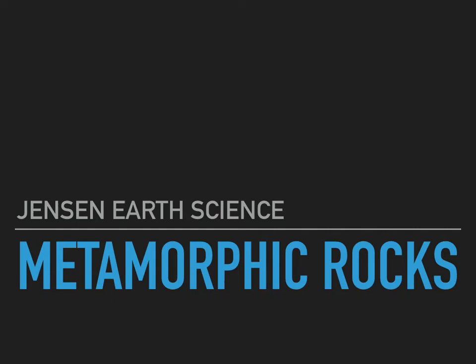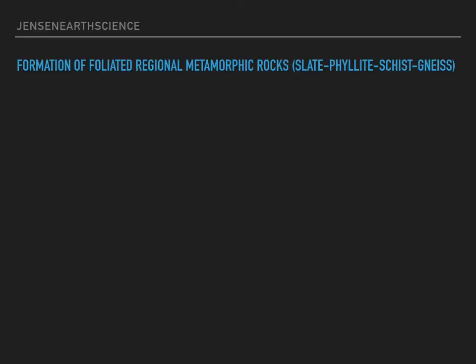Hi, this is Jensen AirScience. Today I will do an overview of metamorphic rocks, specifically foliated regional metamorphic rocks. We'll begin with the formation of foliated regional metamorphic rocks. These rocks are slate, phyllite, schist, and gneiss.